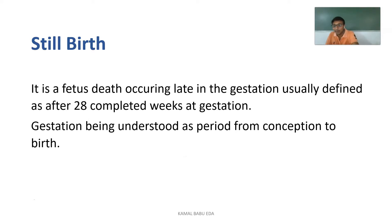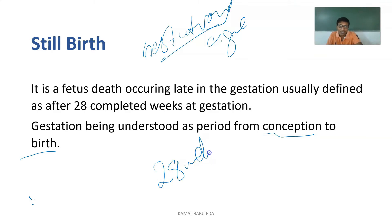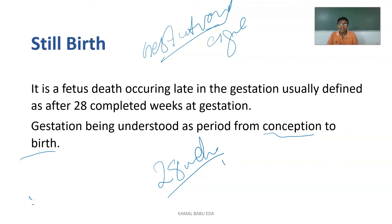First, let's look at still birth. This involves gestational age — the period from conception to the birth of the baby. At 28 weeks of gestational age, a baby is able to survive on its own. If the baby dies after 28 weeks of gestational age, it is considered a still birth.